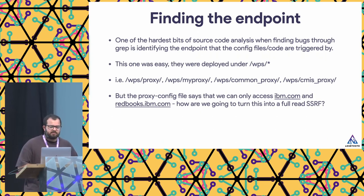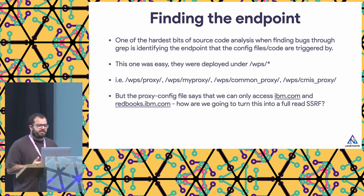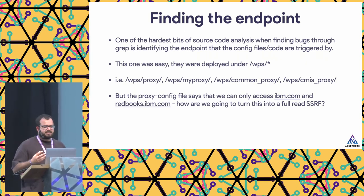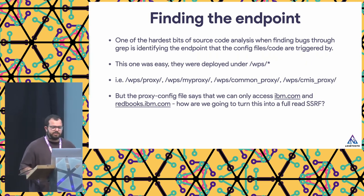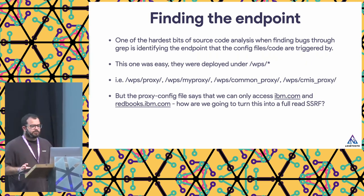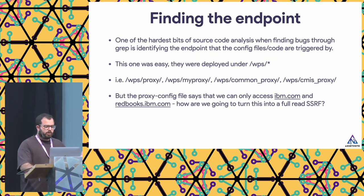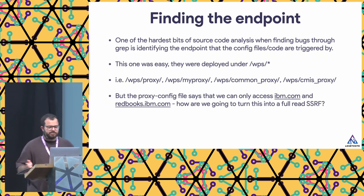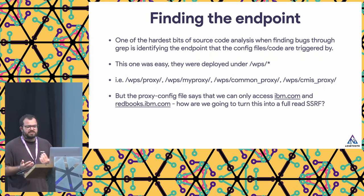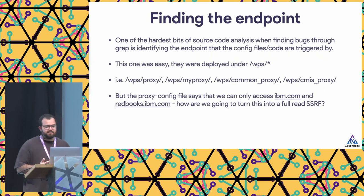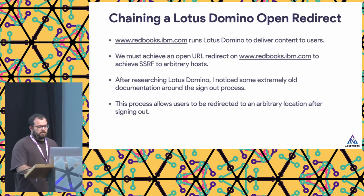With enterprise web applications, it can be tricky to understand where endpoints are on the application. In this scenario, everything was under the path /WPS — so we had proxy, my proxy, and common proxy, all mapped at /WPS/. The config file said we could access ibm.com and redbooks.ibm.com, but the question was: how are we going to turn this into a full read SSRF and access any host we want?